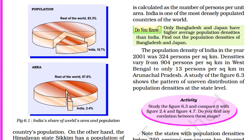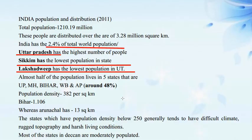When it comes to population, it is important to understand what population density is. It is the number of people per unit area — generally we try to know how many people live in one square kilometre. In India, the average is 382 persons per square kilometre. The highest population density is in Bihar, where 1106 people live per square kilometre.